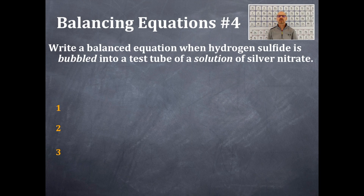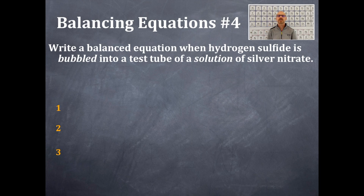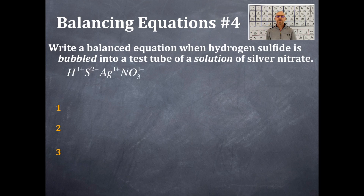It's bubbled into a solution. 'Solution' tells you the state of matter hint, and that is silver nitrate. Silver is a periodic trend charge of a plus one. Nitrate is a polyatomic ion — that's NO₃ with a minus one.